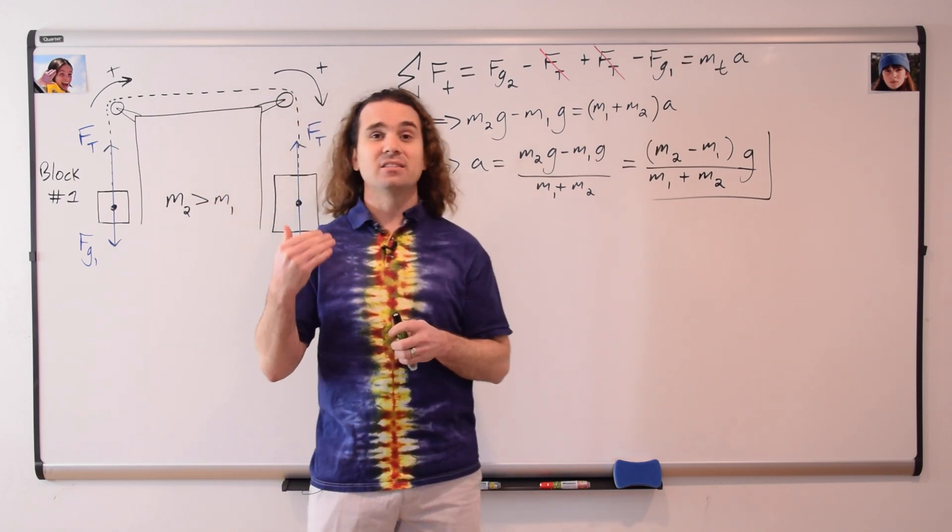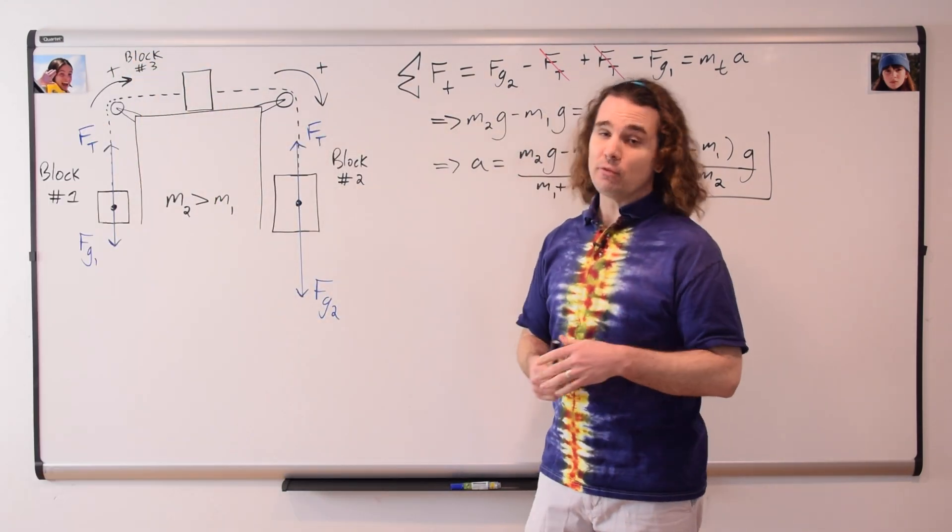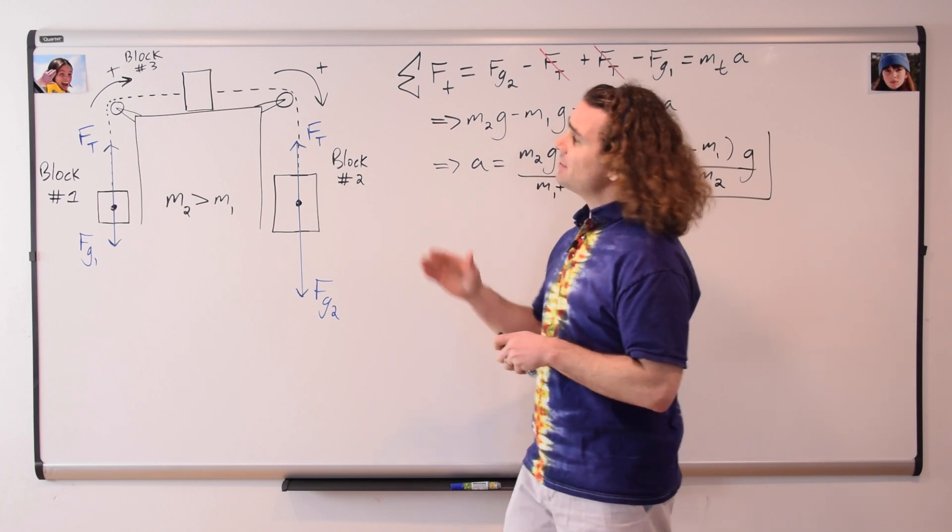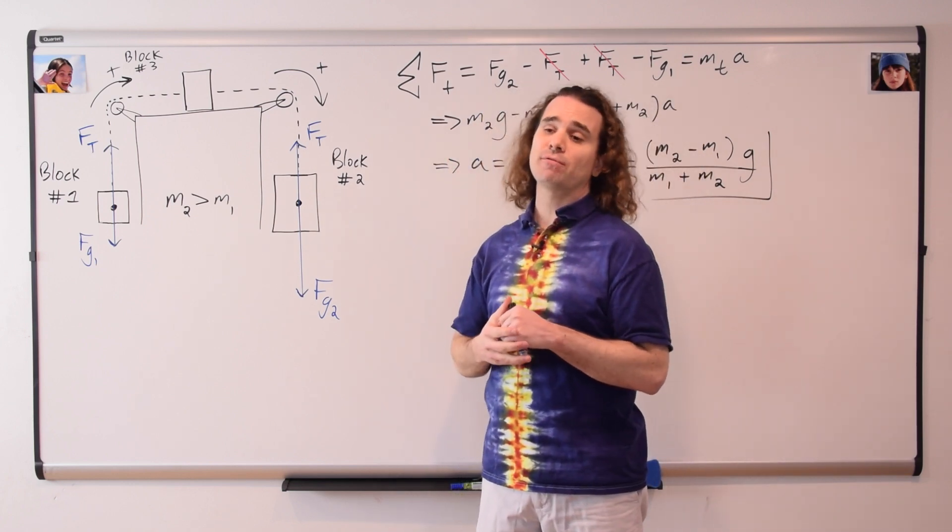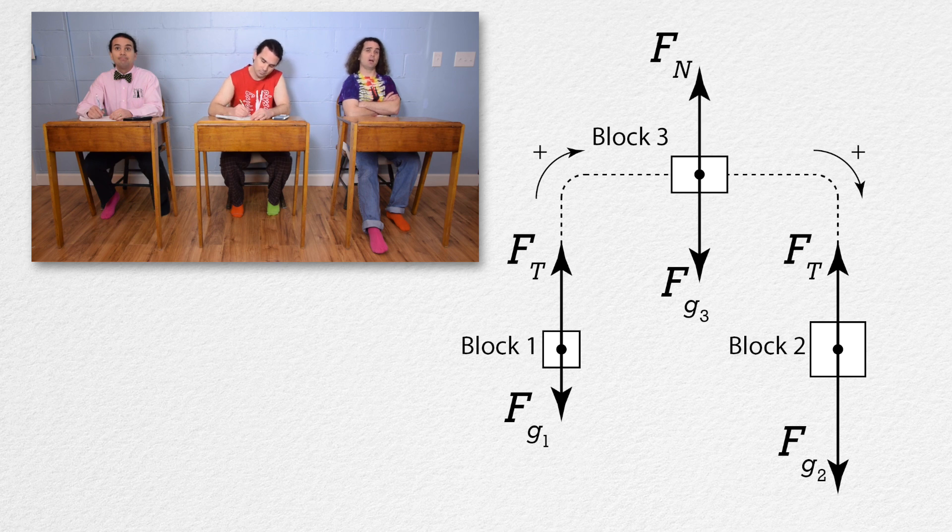Okay, part C adds a third mass. There is no friction between block three and the table. Bo, how does adding block three change the free body diagrams? Well, there is a force of gravity three down on block three and a force normal up on block three caused by the table.